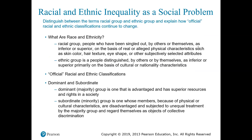Let's first start by distinguishing between the terms racial group and ethnic group and explain how official racial and ethnic classifications continue to change. Racial groups are people who have been singled out by either themselves or others as inferior or superior on the basis of real or alleged physical characteristics — most often skin color, but also hair texture, eye shape, or any other subjectively selected attribute. An ethnic group, on the other hand, is a group of people distinguished by others or themselves as inferior or superior, primarily based on cultural or nationality characteristics, such as country of origin.